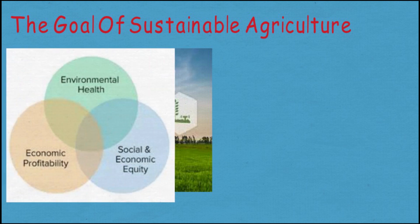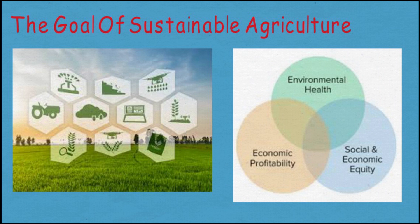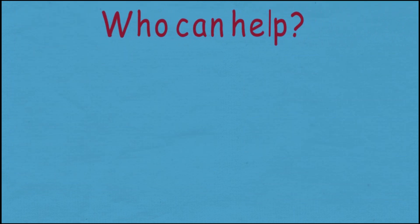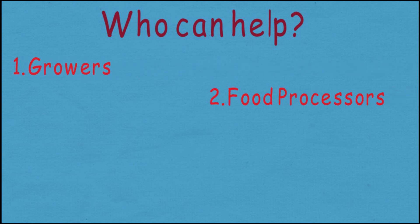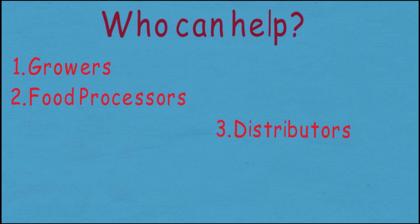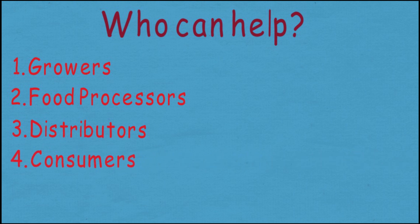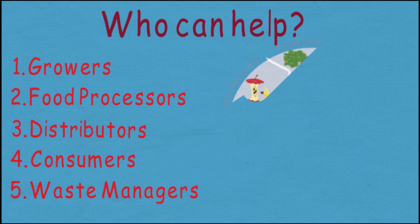The three main objectives of sustainable agriculture are a healthy environment, economic profitability, and social and economic equity. Every person involved in the food system — farmers who grow our crops, food processors, distributors, us the consumers, and the waste manager — can play a role in ensuring sustainable agriculture systems.